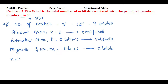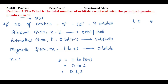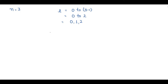For n equal to 3, the value of l will be 0 to n minus 1, that is 0 to 2. So the possible values of l are 0, 1, and 2. Now let's assign names to these subshells: if l equal to 0, the subshell is known as s; if l equal to 1, it is known as p; and if l equal to 2, it is known as d.